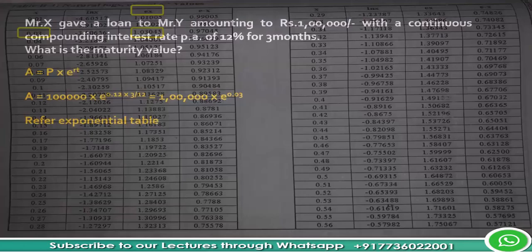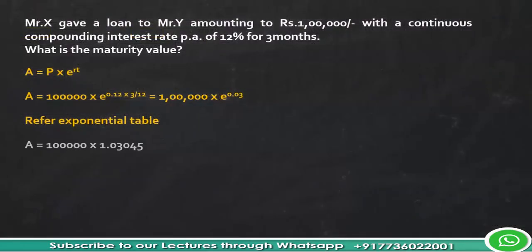So let's capture that. A is equal to 100,000 into 1.03045, and this is the value. What is this 1.03045? It is e^0.03, and you get 103,045. And this is the maturity value when continuous compounding is done at the rate of 12% for a period of 3 months.